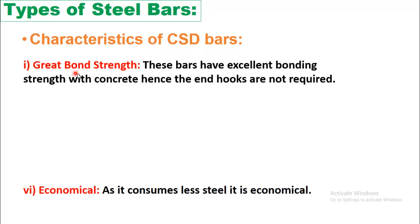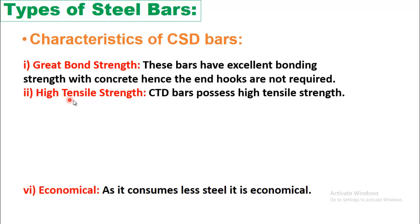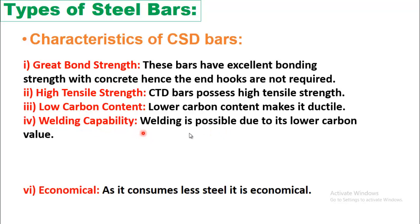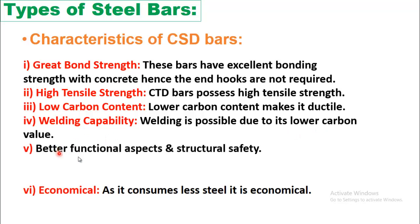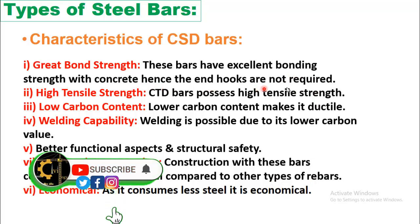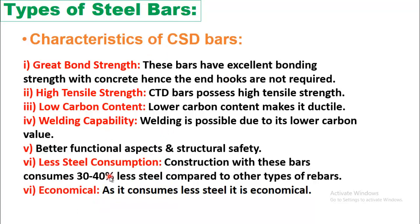Characteristics of CTD bars include: great bond strength with concrete, meaning end hooks are not required, saving steel; high tensile strength; low carbon content making it ductile; welding capability due to lower carbon value; better functional aspects and structural safety; and less steel consumption — construction with CTD bars consumes 30 to 40 percent less steel compared to other types. Since hooks are not required and less steel is consumed, CTD bars are considered more economical.